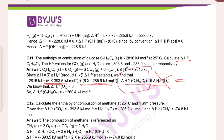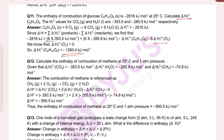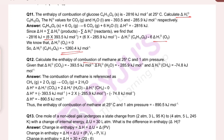After substituting the values including glucose and the other species, the enthalpy of combustion comes out to minus 1260.4 kilojoules.